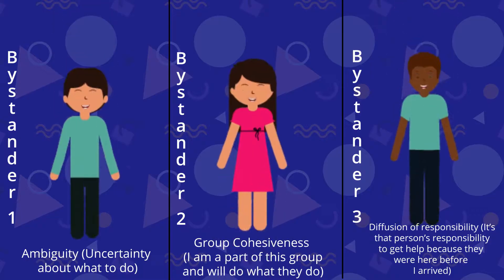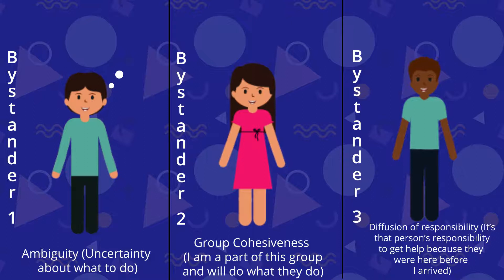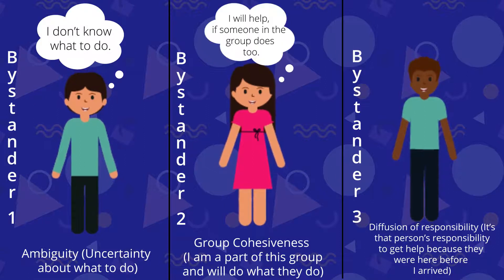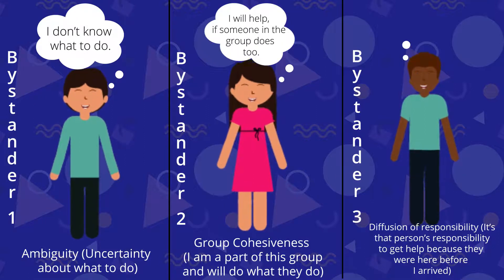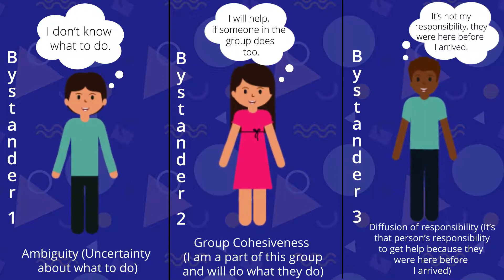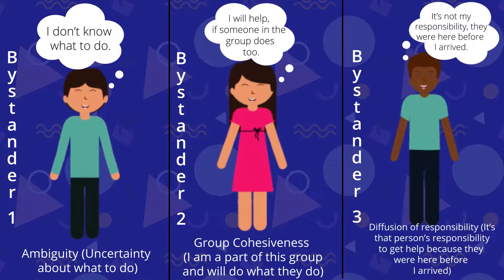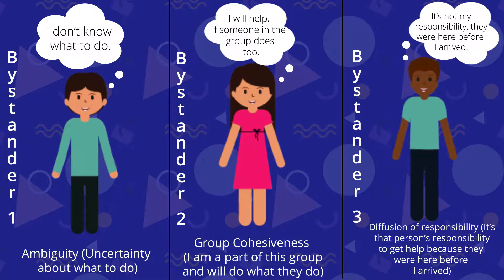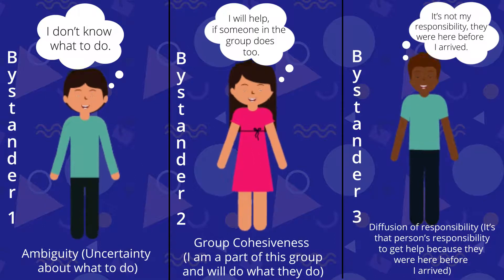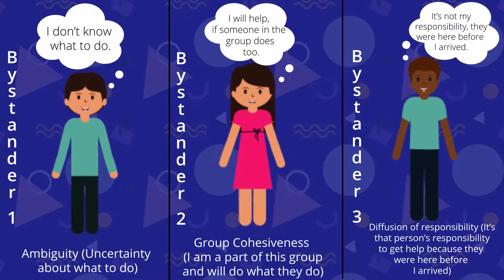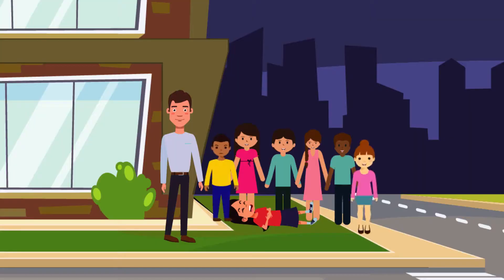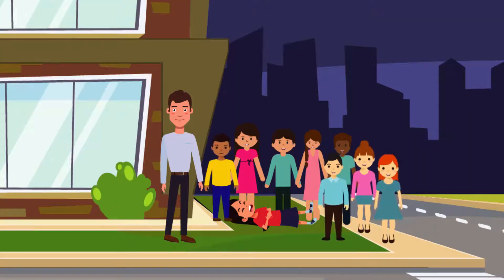The reason why there were multiple bystanders but none of them intervened can be attributed to the bystander effect. This effect makes it less likely for people to intervene in emergencies if there are others around them. The more people there are, the more each bystander is discouraged from doing something about the problem.